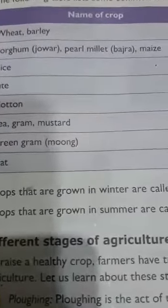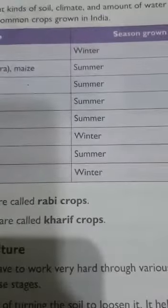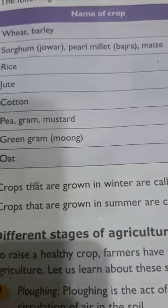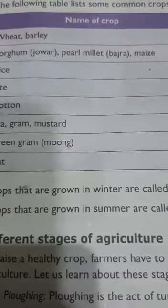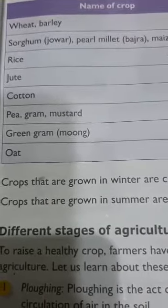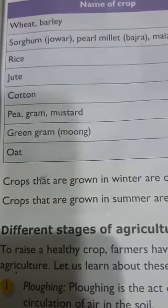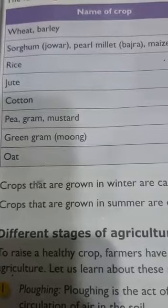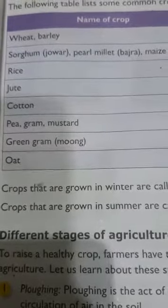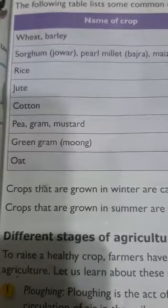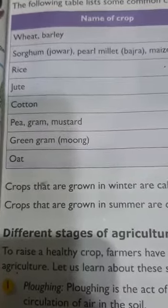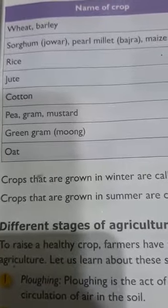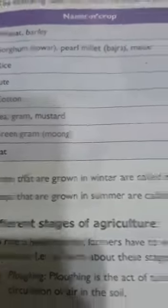Wheat and barley grow in winter season. Sorghum — or jowar — pearl millet or bajra, and maize grow in summer season. Rice and jute also grow in summer season. Cotton grows in summer. Pea, gram, and mustard grow in winter season. Green gram — moong — also grows in summer season. And oats grow in winter season.